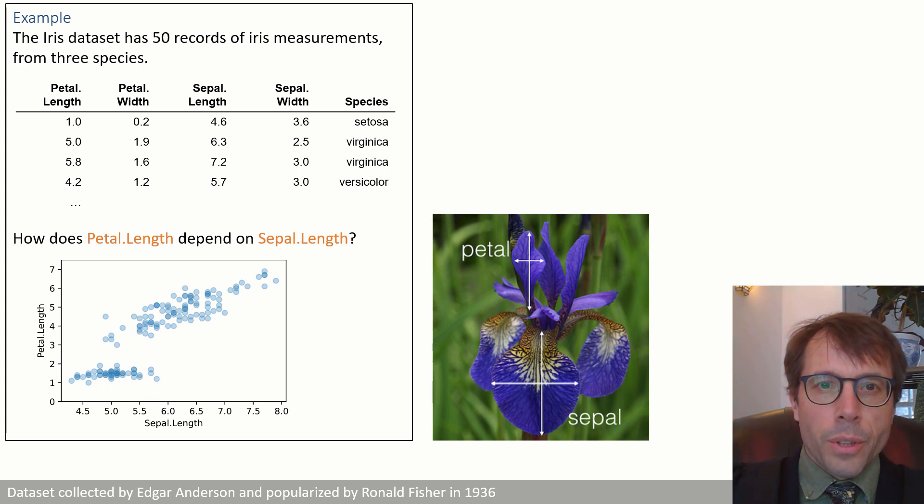This example is a classic data set of measurements of irises. The data set was collected in the 1930s by a botanist called Edgar Anderson and popularized by Ronald Fisher, described as a genius who almost created the foundations for modern statistical science.